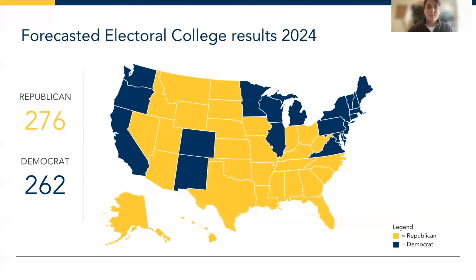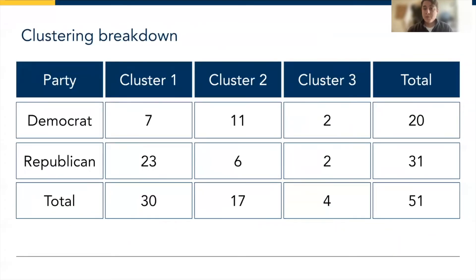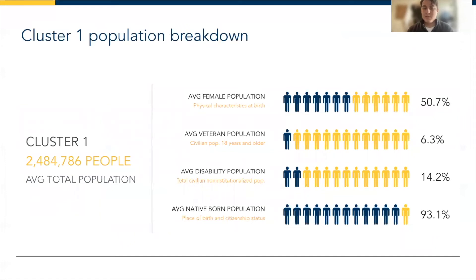It's important to understand the results and answer the earlier research questions. A clustering breakdown shows that the majority of cluster one states tended to vote Republican, a majority of cluster two states tended to vote Democratic, and cluster three is particularly interesting because those are the largest electoral college states with the most unique attributes — so there isn't an even spread. Notably, there were more Republican-voting states constituting many of the smaller ones, which ultimately allowed the Republican Party to win the election.